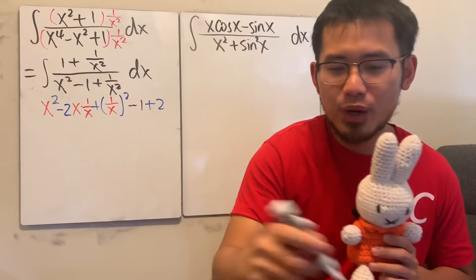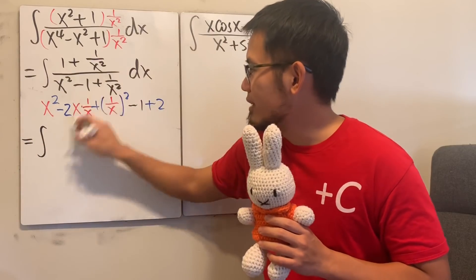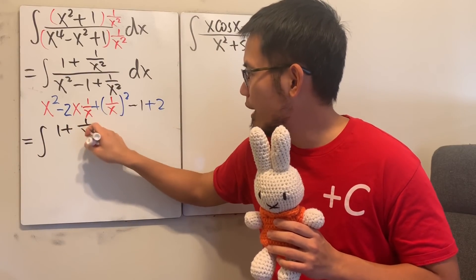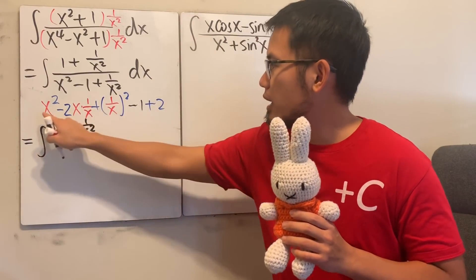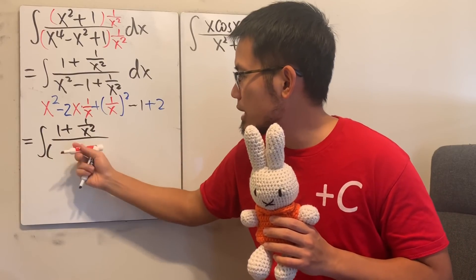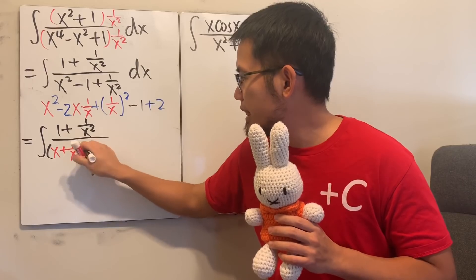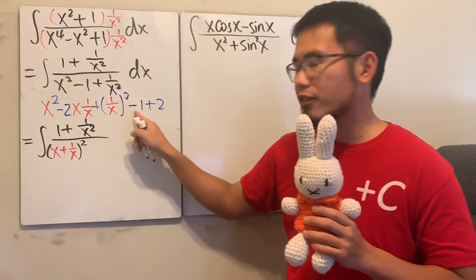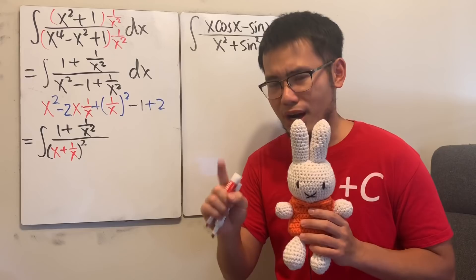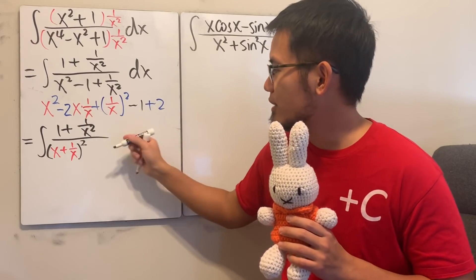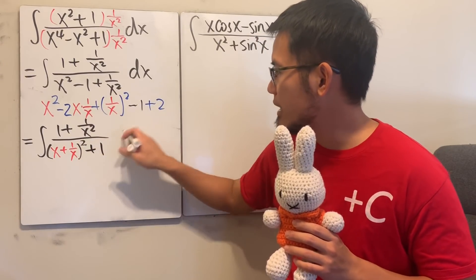Alright. Now, here we have the following. Integral on the top is just 1 plus 1 over x squared over. All this is just x plus 1 over x, and then to the second power. And here we have minus 1 plus 2, that's just 1. Yes. Alright. So, this is plus 1. And then we have the dx.